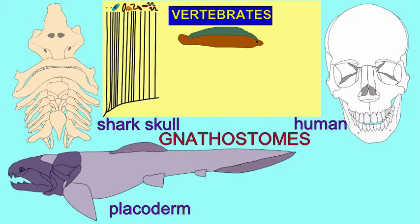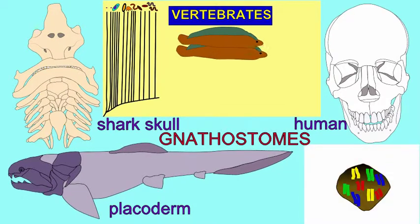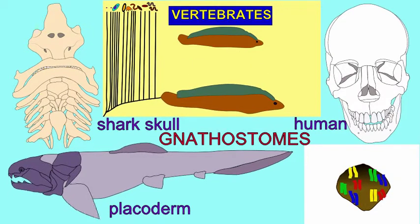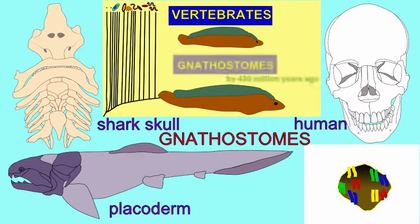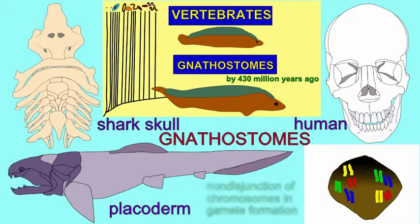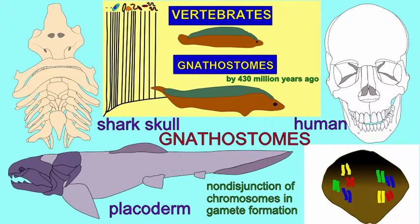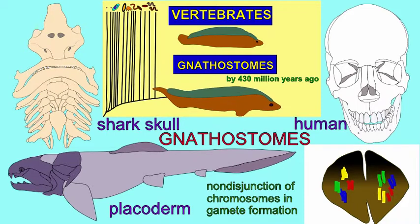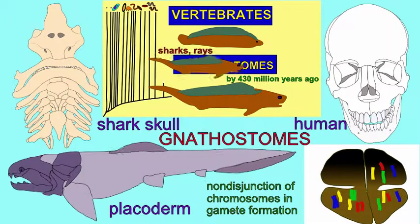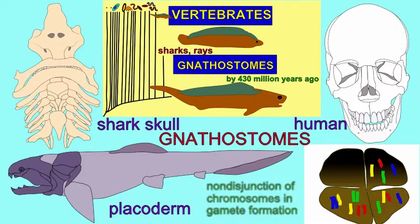Somewhere between the Ordovician and Silurian periods, a new group of fish evolved known as the gnathostomes. This group probably owes much of its origin to a duplication of the genome, so that there were additional genes which could be modified following this duplication event.